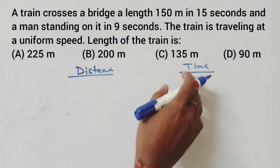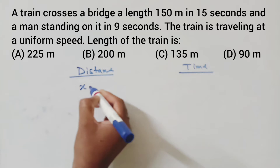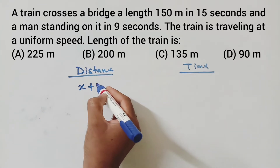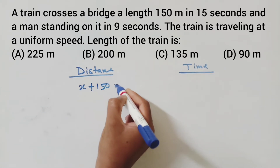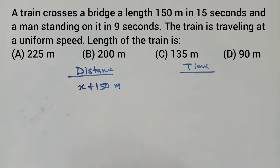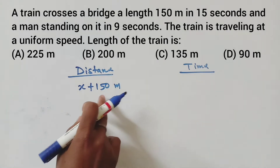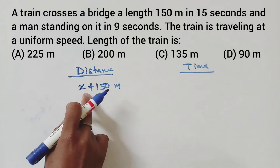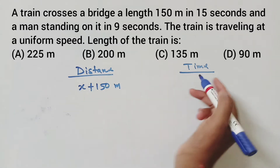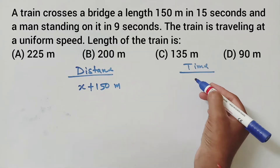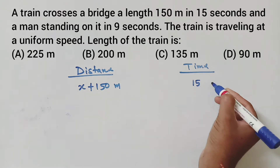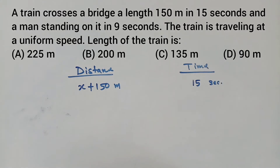I am taking the distance and time. The train crosses a distance of X plus 150 meters, where 150 meters is the length of the bridge. The train crosses this distance in 15 seconds, and it passes a man standing on the bridge in 9 seconds.